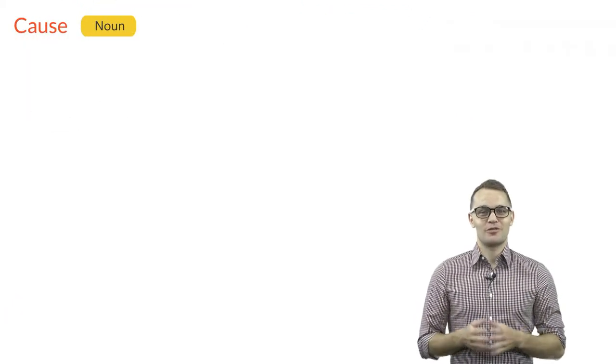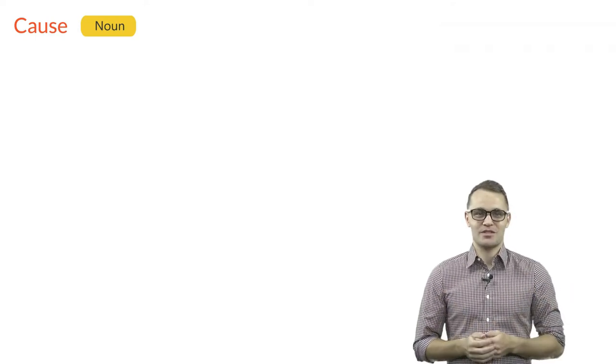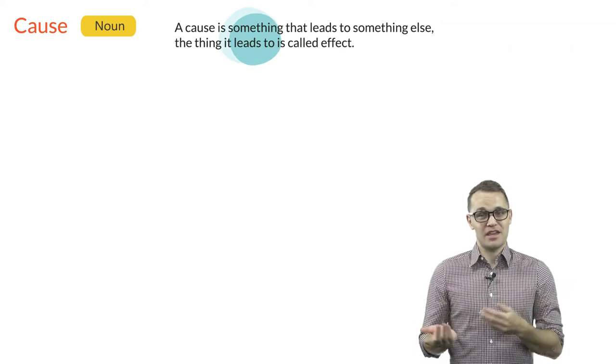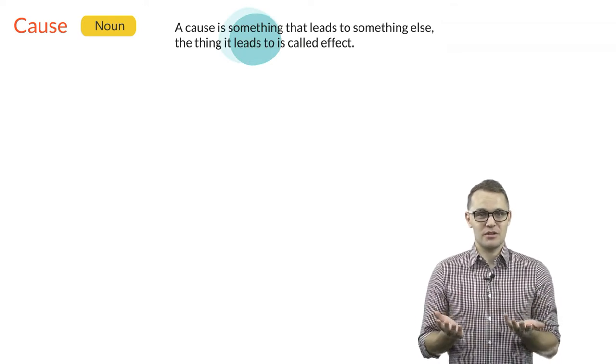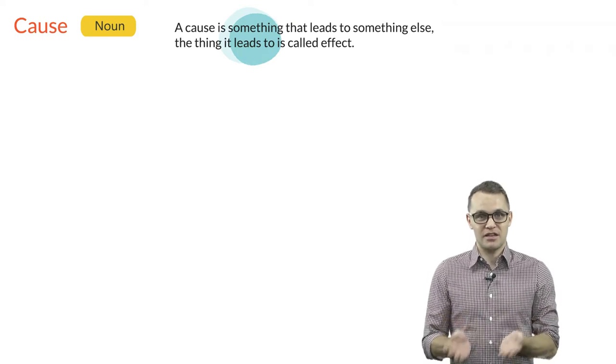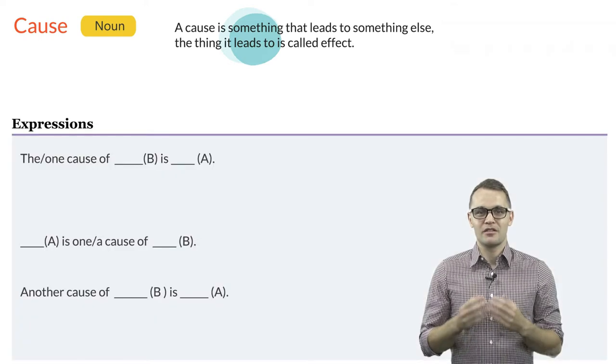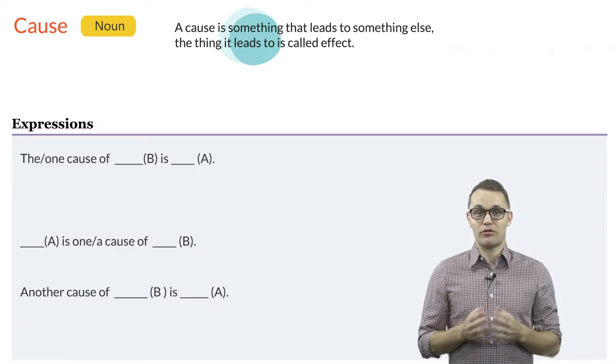Let's first talk about the word cause itself to make sure you understand the word and how to use it. A cause is something that leads to something else. The thing it leads to is normally called an effect. That's why you are likely to hear the phrase cause and effect when people are trying to analyze how things happen.